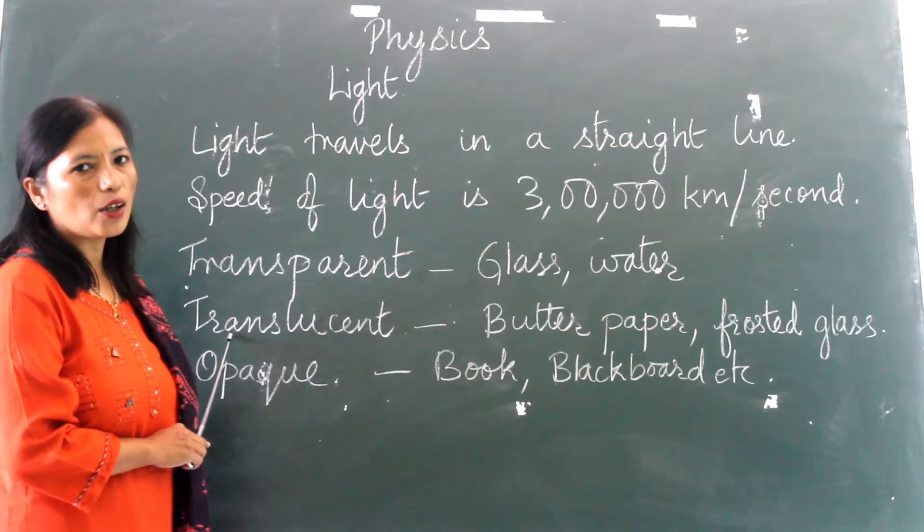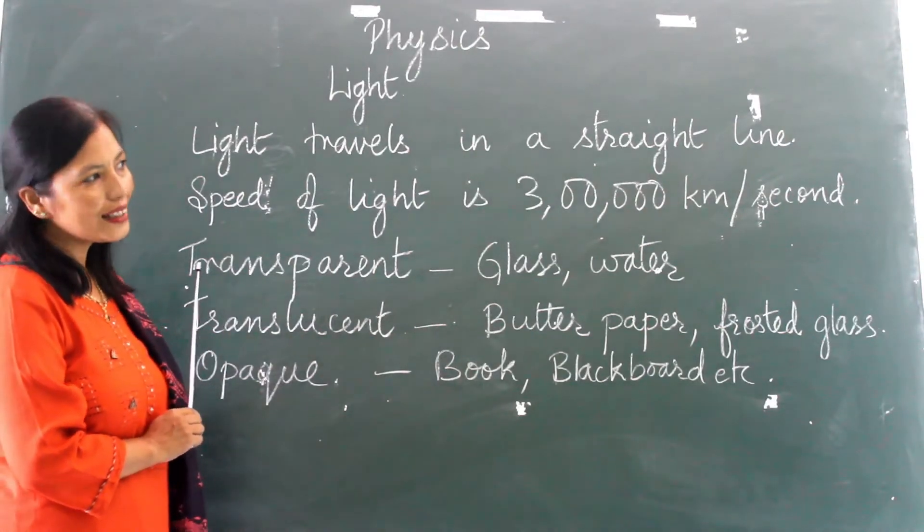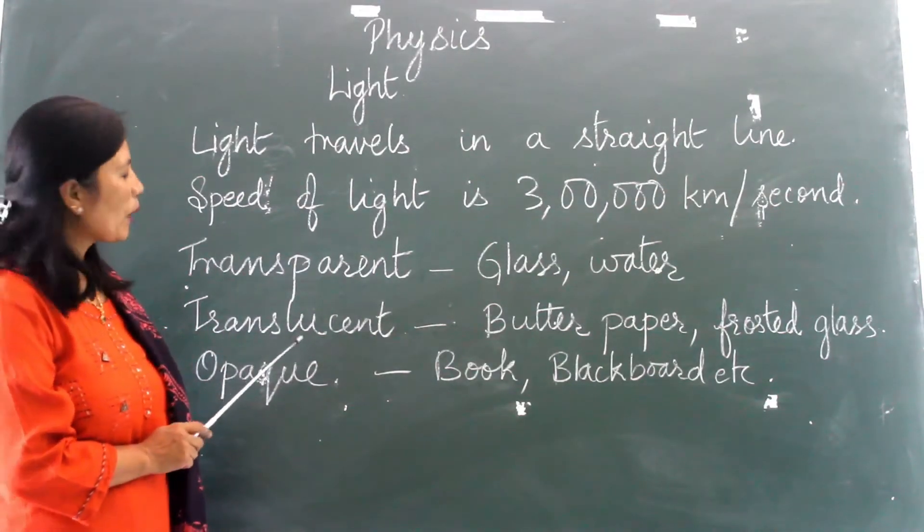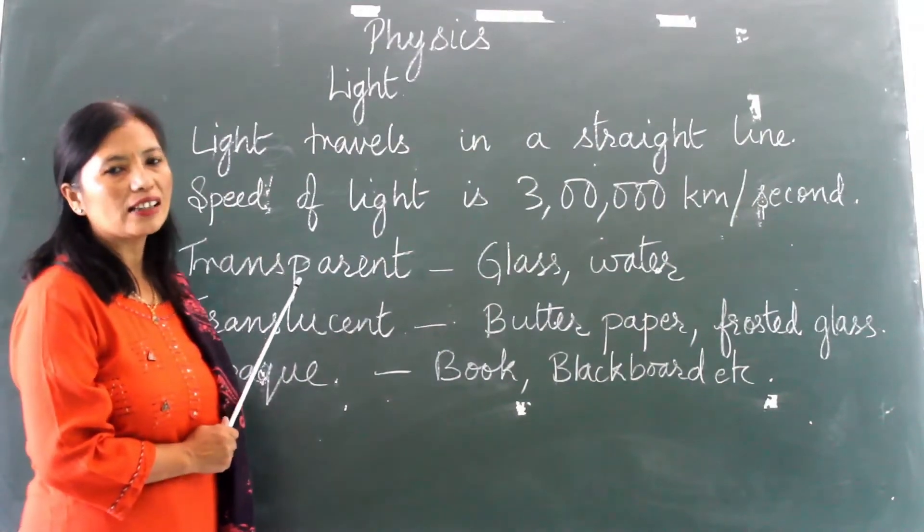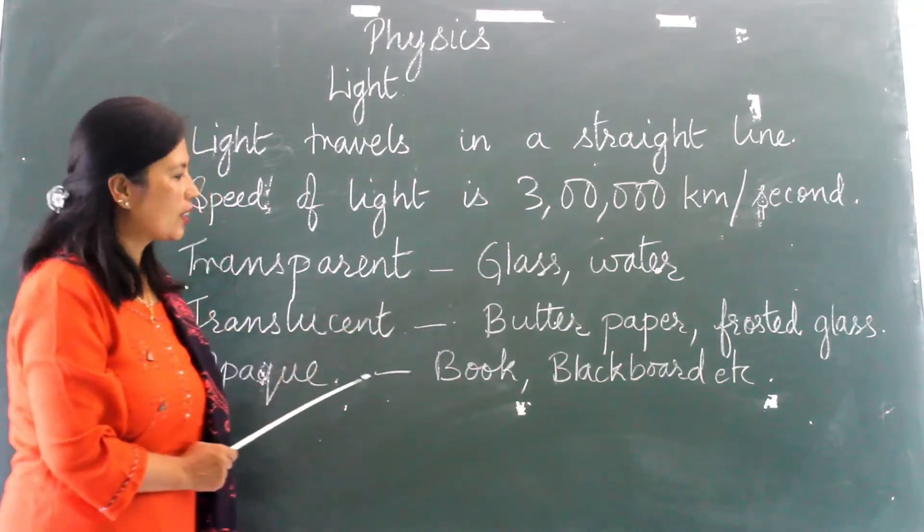Translucent materials are those through which light can pass through but we cannot see clearly. Example: butter paper, frosted glass, etc.